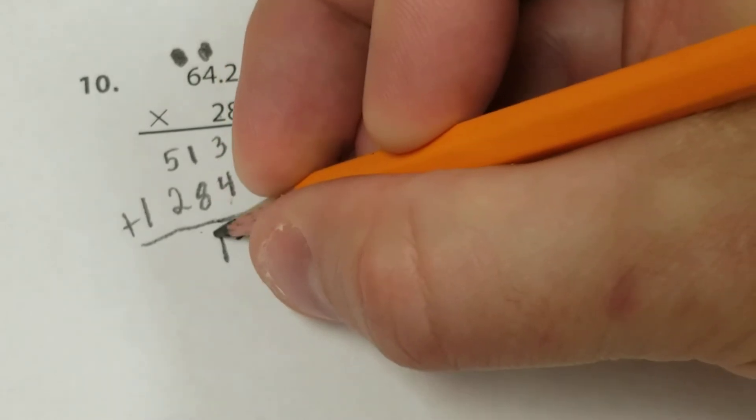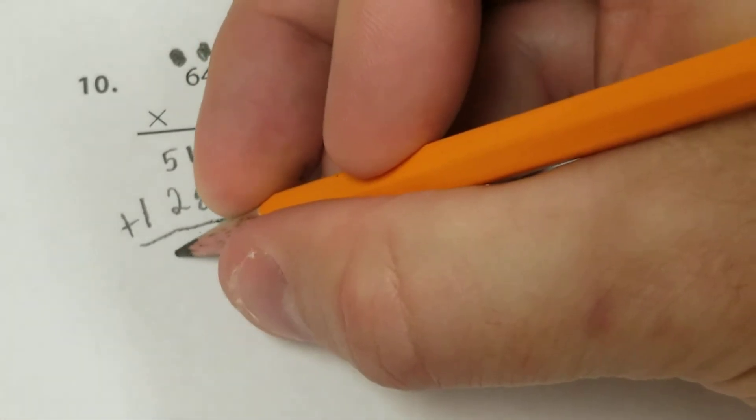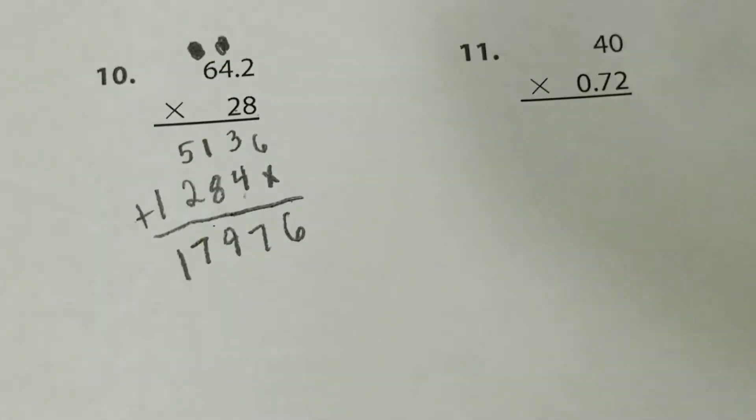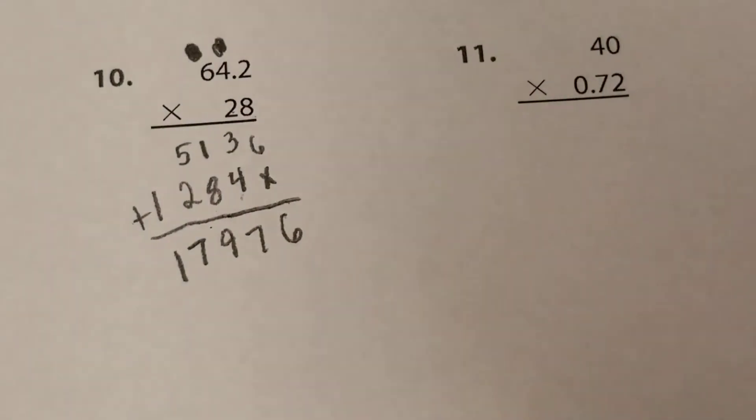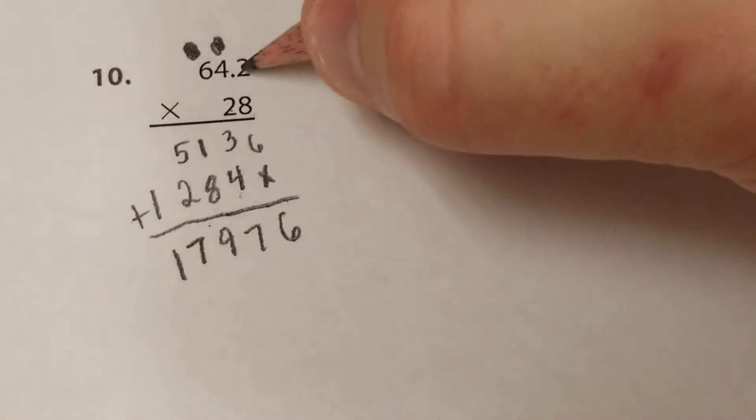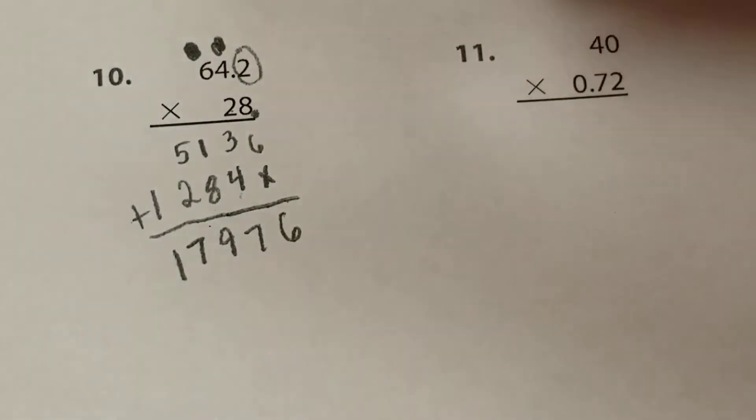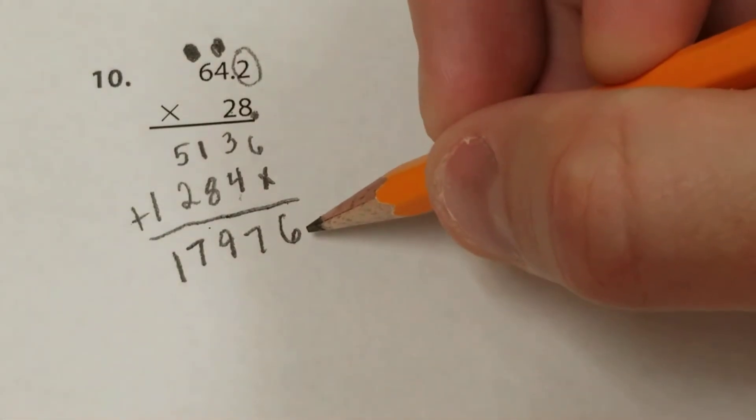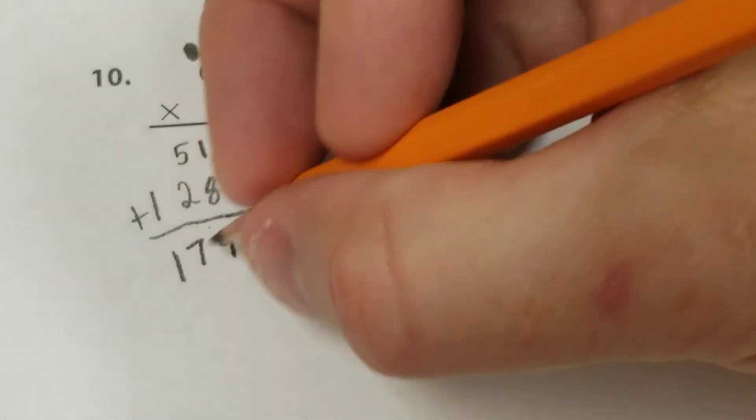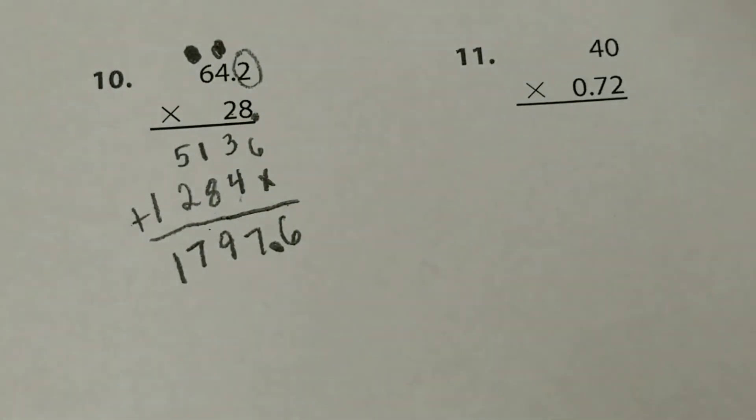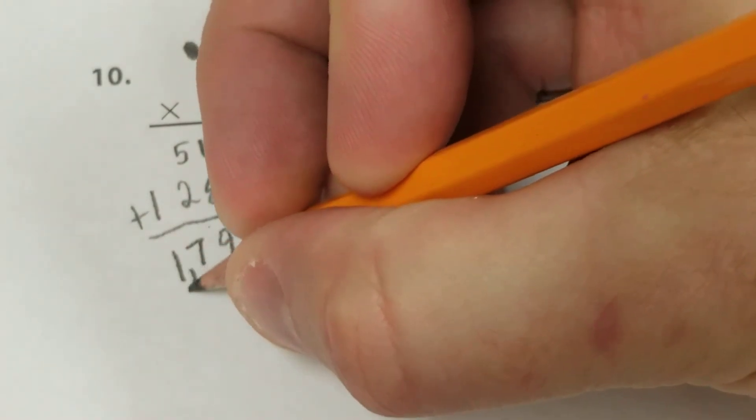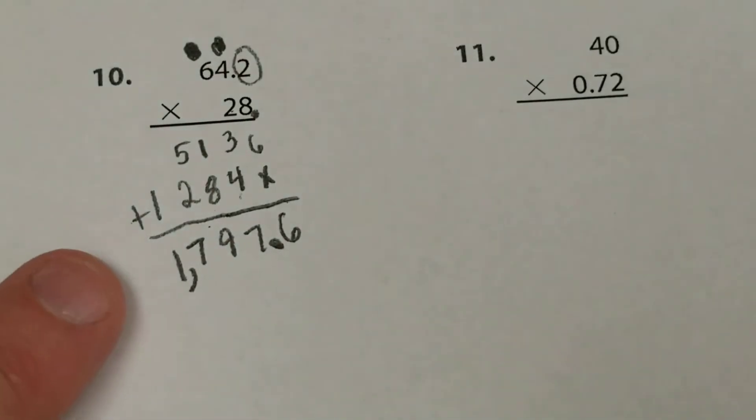I'm going to start in the tens column. 2 times 2 is 4. 2 times 4 is 8. 2 times 6 is 12. We add as normal: 6 and nothing, 3 and 4, 1 and 8, 5 and 2, 1. Then you go and you count your decimal spots or your places after the decimal. I have one spot here. This is a whole number, there's nothing after it. So again, I have one spot. So I start at the end and I just move my decimal over one spot. This time it's going to be between my 7 and my 6. And to show you really know what you're doing, you can put your comma between your 1 and your 7. So our answer is 1,797.6.